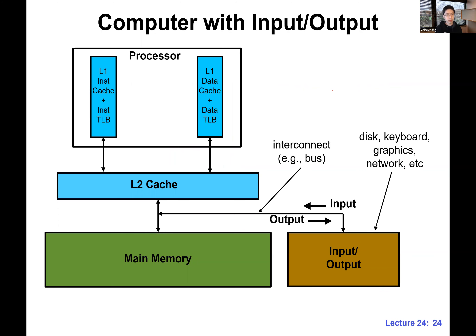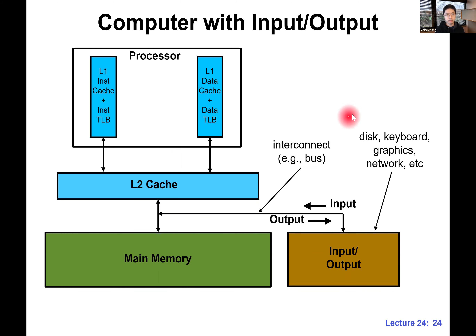Let's switch to input and output. These are actually closely related to exceptions and interrupts. Now that we have seen how to build a microprocessor and we have built a main memory, we also need to make sure that our computer can talk to the outside world. That's where we need to bring in input and output devices, like hard disk, keyboards, graphic cards, and network cards.